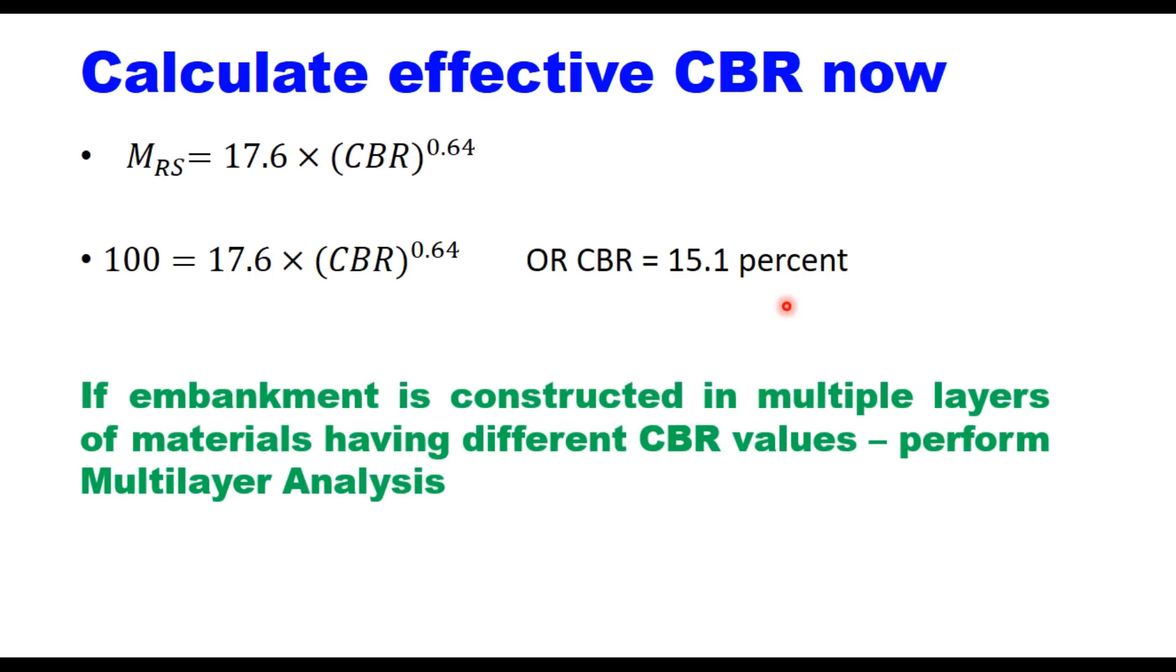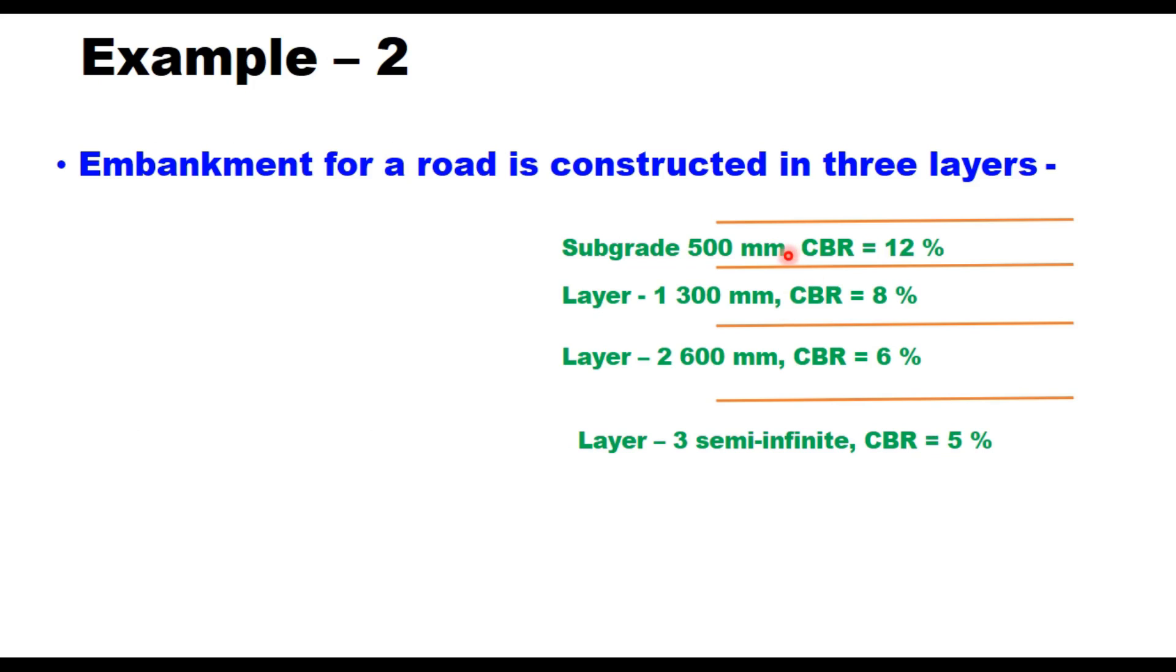Now if embankment is constructed in multiple layers of materials having different CBR values, then we should perform multi-layer analysis, not two-layer analysis but multi-layer analysis. Now let me explain this again with the help of one example: the top layer, layer 1, is your subgrade of 500 millimeter thickness having a CBR of 12 percent. Now below this, embankment is made in three layers. Layer 1 which is 300 millimeter thick, the soil CBR is 8 percent. Layer 2, 600 millimeter thick and CBR is 6 percent. And layer 3, that is semi-infinite and CBR is 5 percent. So now it is a four layer structure: layer 1, layer 2, layer 3 and layer 4.